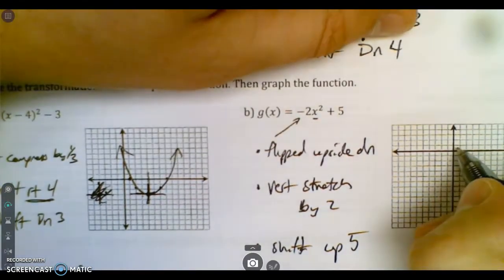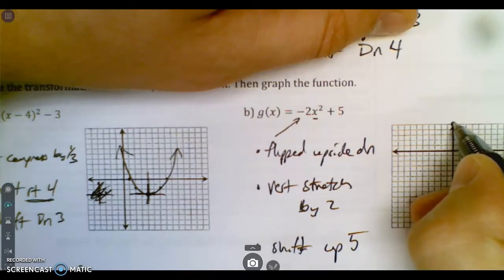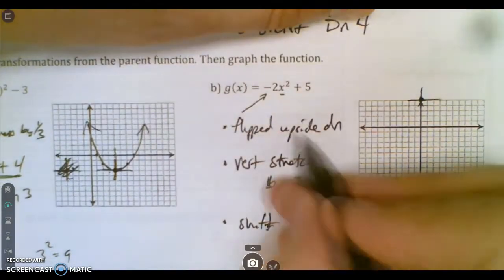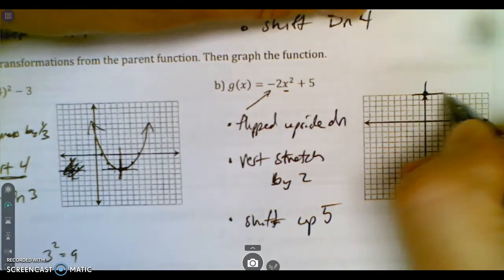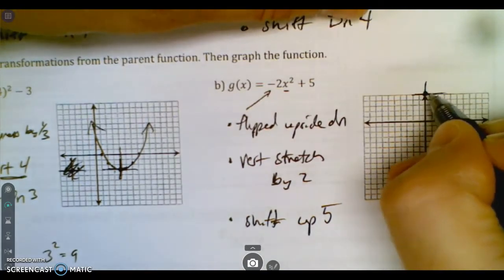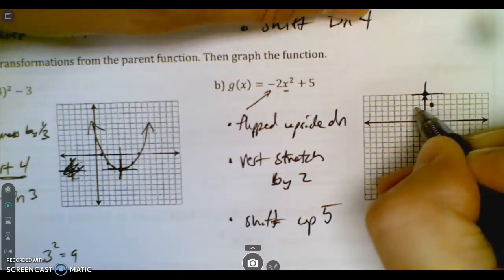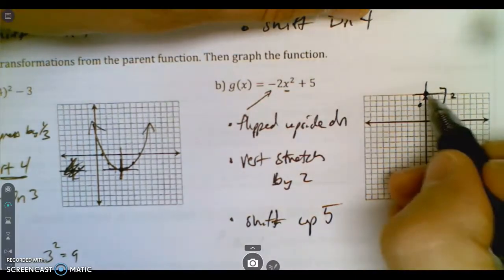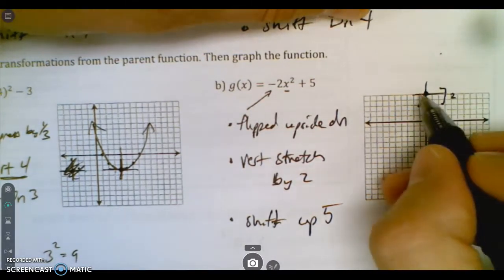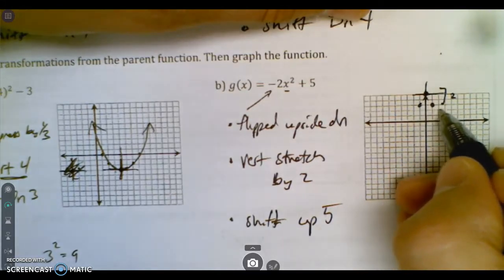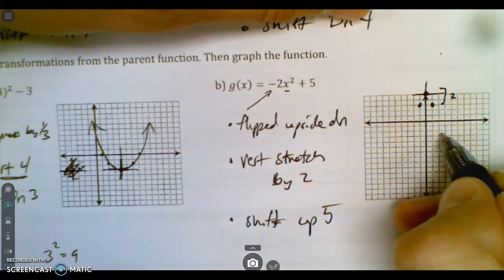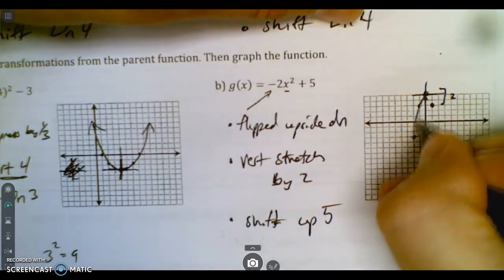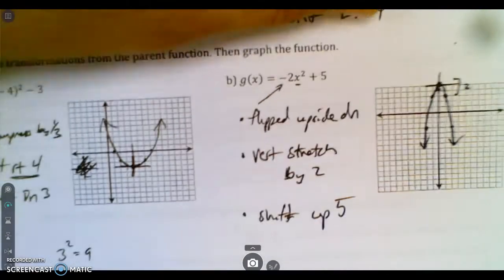And then we shift up 5. So we're going to go up 5. 1, 2, 3, 4, 5. Right up here. And that's my new 0, 0. So now I need to flip it upside down and stretch by 2. So normally I would go right 1, up 1 on my parent graph. Now, this time I'm going to go right 1, down 2. So down is because of the negative. The 2 is because every y value should be twice as far. And then the normal point is right 2, up 4. Well, I got to be twice as far down. So right 2, down 8. Boom.